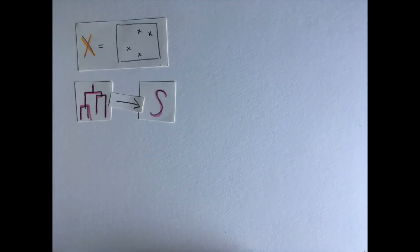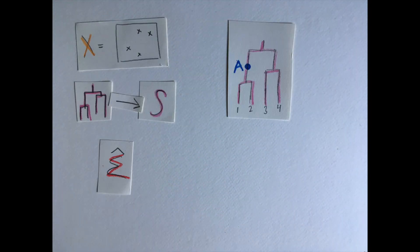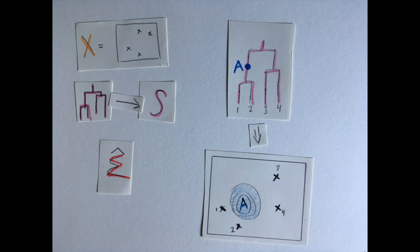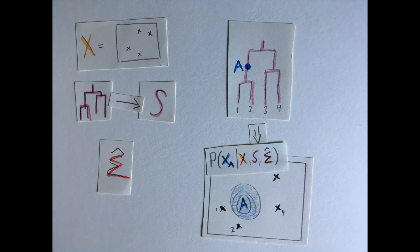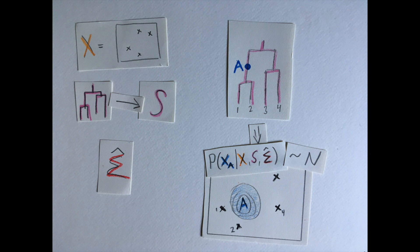Given the sample locations, the shared times in a particular tree, and our estimated dispersal rate, we can also locate genetic ancestors. Any internal point on a tree represents an ancestor of the samples below it. In this case, A is an ancestor of samples 1 and 2, and we can calculate the probability distribution of this ancestor's location. It is in fact another nice normal distribution, whose mean and variance depend on how much time the ancestor's lineage shares with each of the sample lineages.